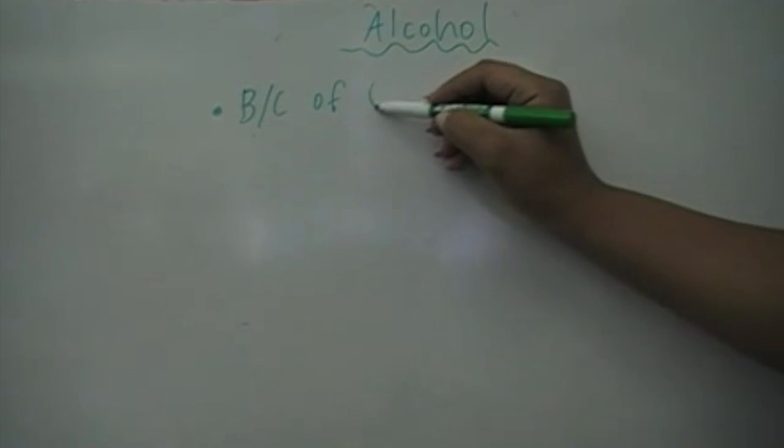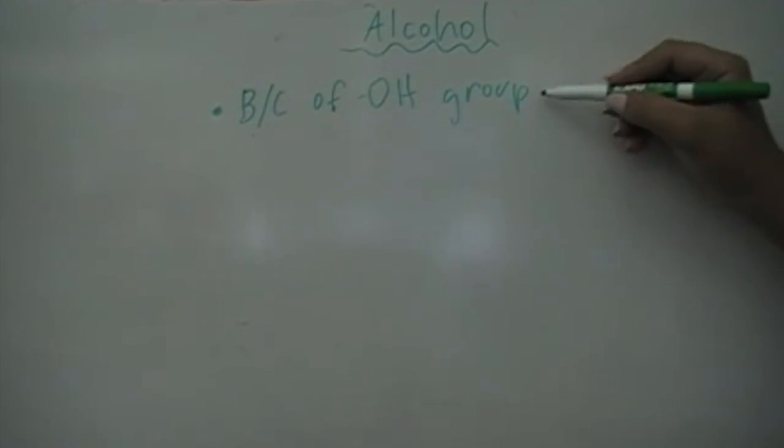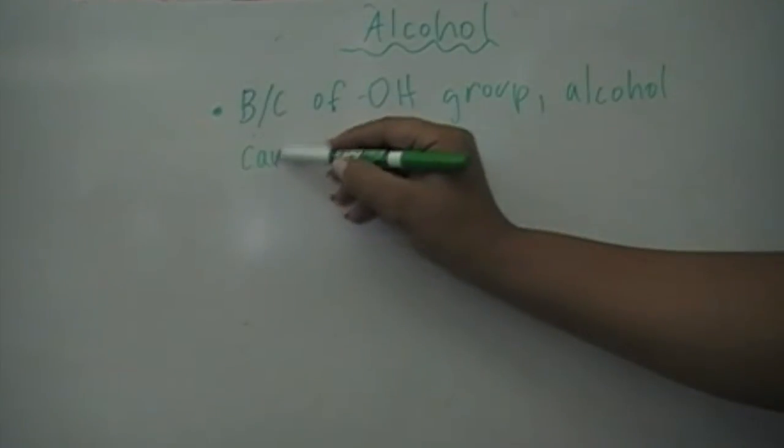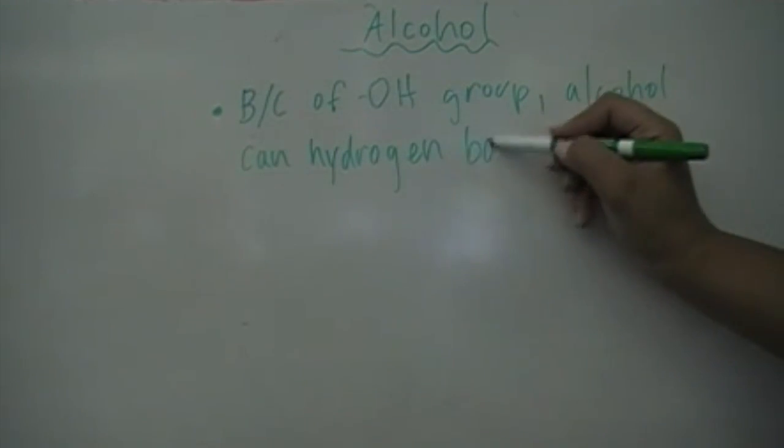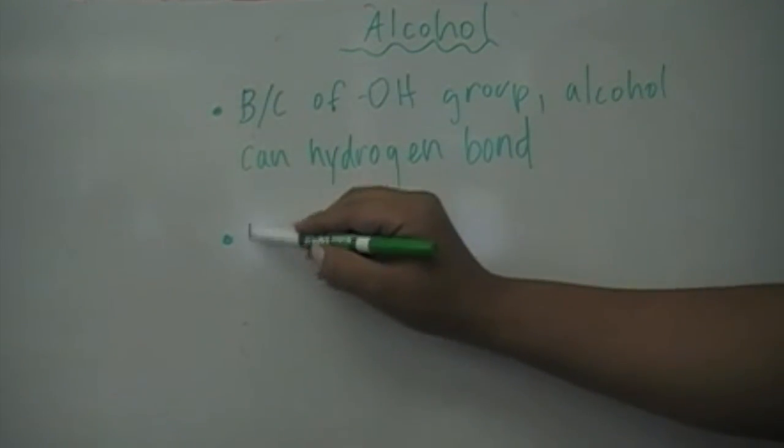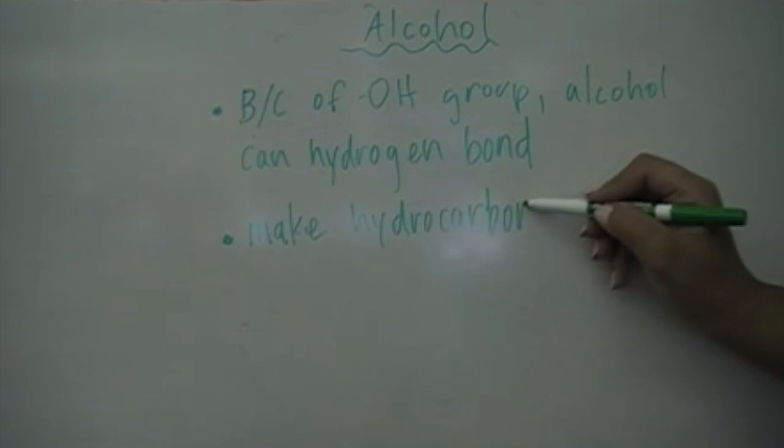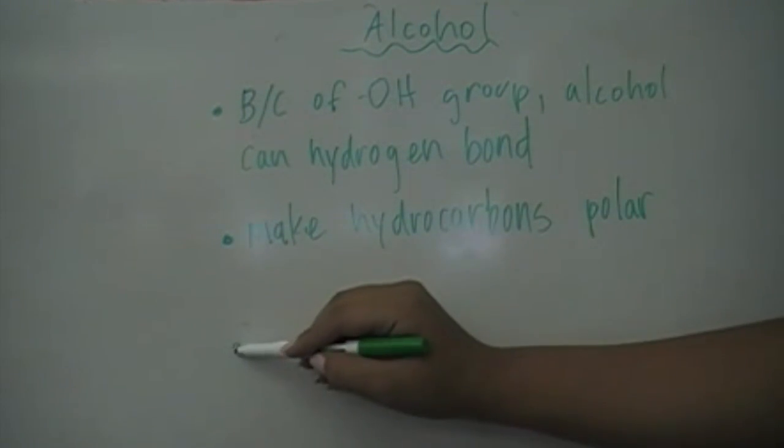Due to the presence of an OH group, alcohols can hydrogen bond. This leads to higher boiling points compared to their parent alkanes. Alcohols are polar in nature. This is attributed to the difference in electronegativity between the carbon and oxygen atoms.